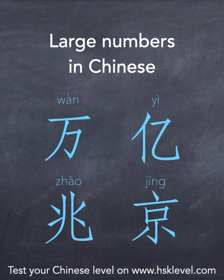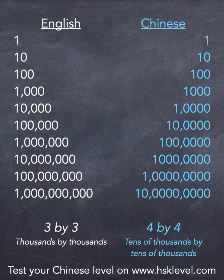Today, we're going to learn how to express large numbers in Chinese, like millions, billions, trillions, etc., using characters like WAN and YI that you may already know, but also using less known characters like ZHAO or JING.